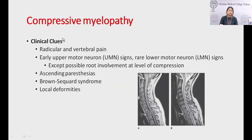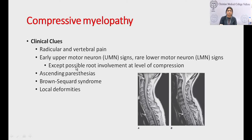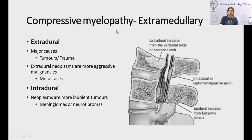Once we have localized the lesion, we determine whether it is compressive or non-compressive. Clues for compressive myelopathy: severe local pain that can be radicular, vertebral pain, early UMN signs, and ascending paresthesias — because sacral fibers are more laterally placed, compression from lateral aspects affects sacral fibers first. It may present as Brown-Séquard syndrome and cause local deformities. If these features are present, we can say with fair certainty the lesion is compressive.